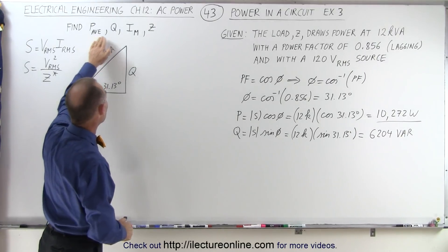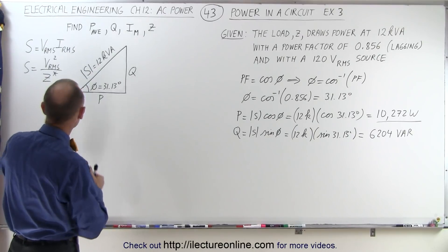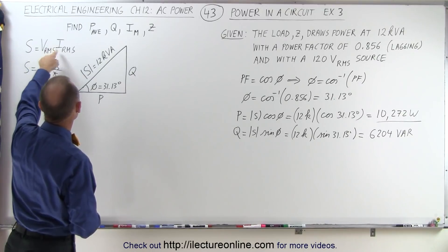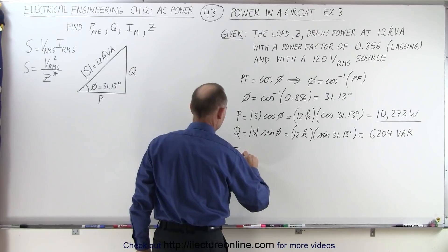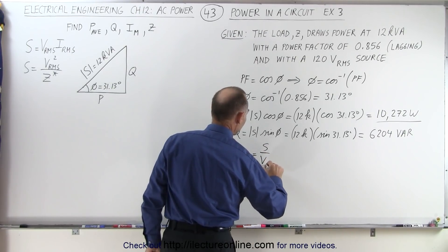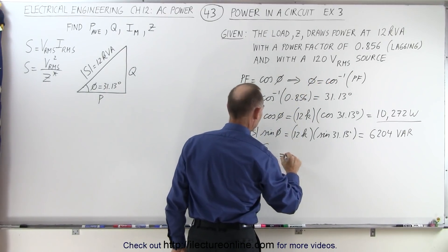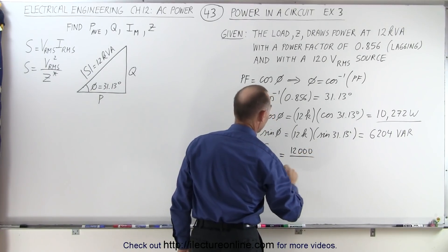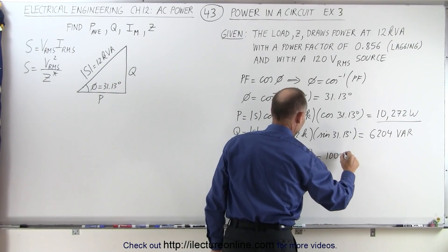So now we got the average power, we got the reactive power. Now we want the maximum current. We realize that the magnitude of the complex power is the product of the IRMS and VRMS, which means that IRMS can be found by taking S divided by VRMS. So in this case, that's 12,000 divided by 120, which equals 100 amps.